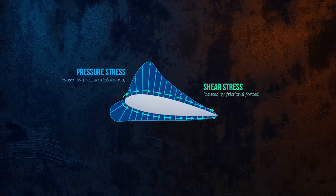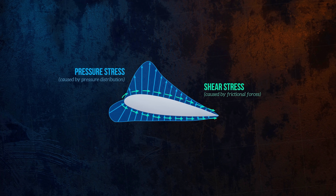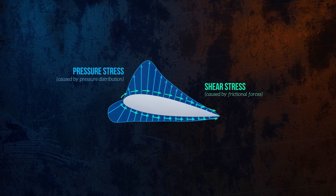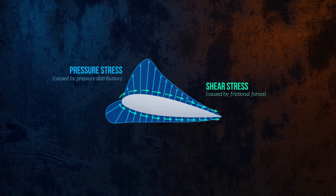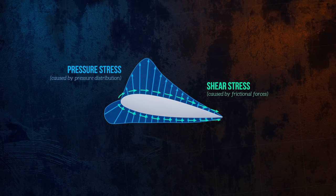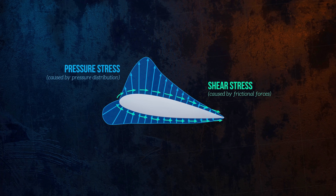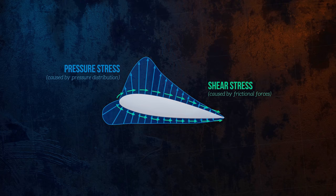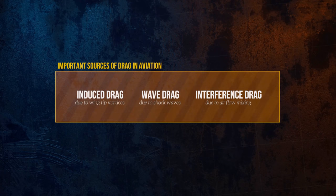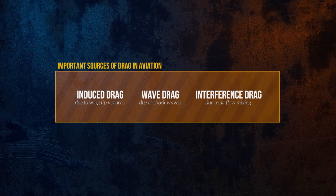We know that pressure stresses and shear stresses are the two fundamental causes of drag. But, in some cases, specific components of the drag force are named because of how they're caused, even though they're just different forms of pressure or friction drag. In aviation, for example, three important sources of drag are induced drag, wave drag, and interference drag.